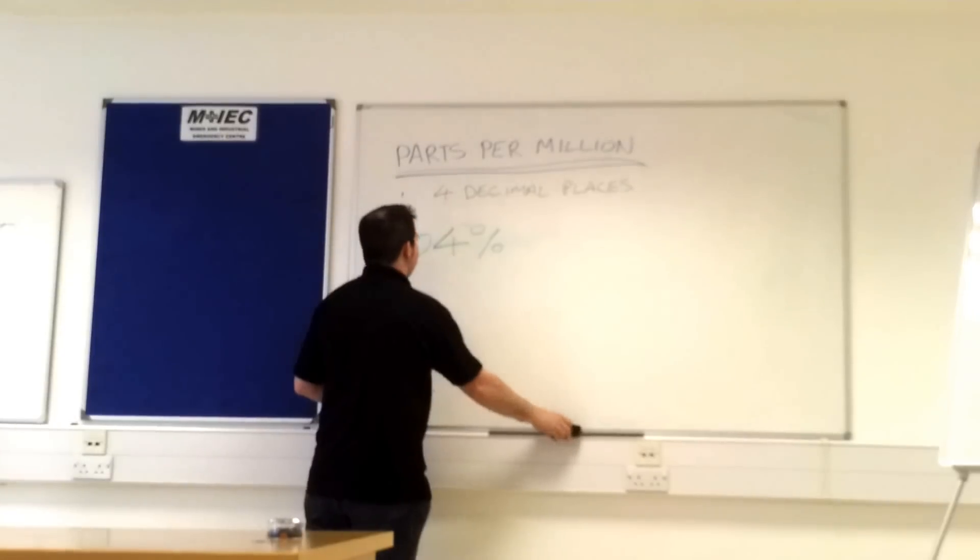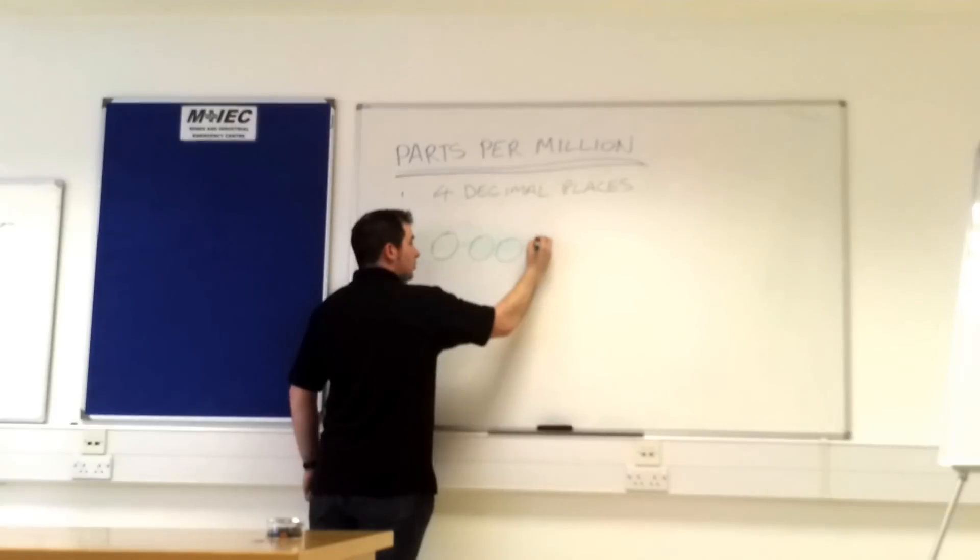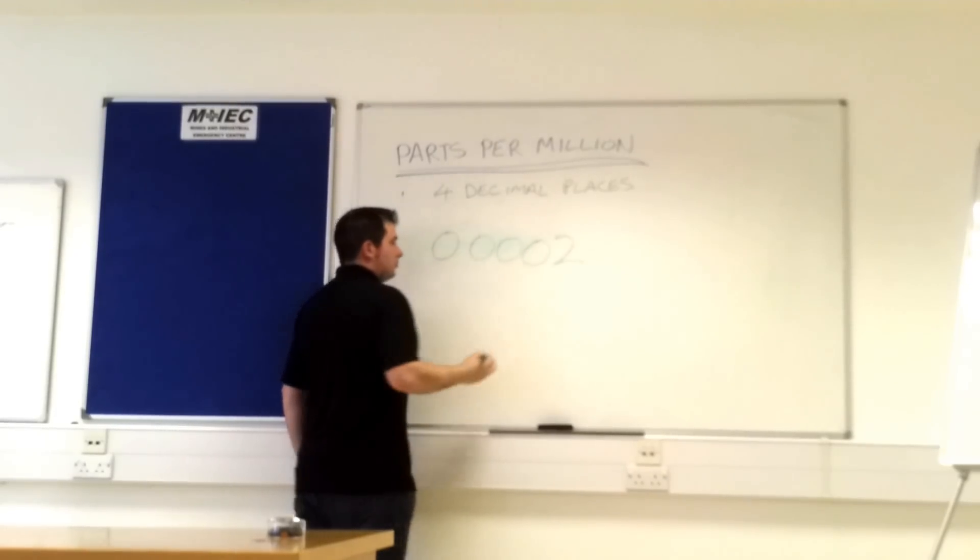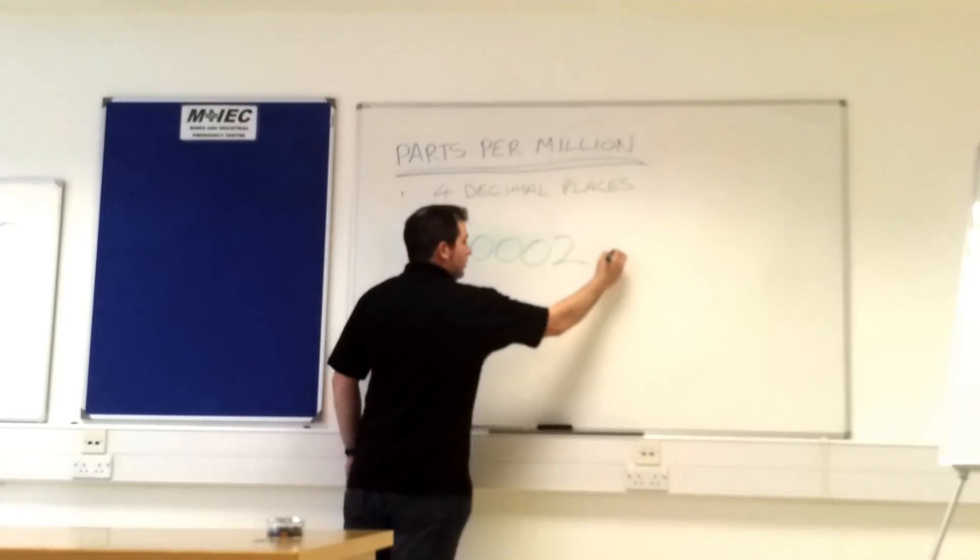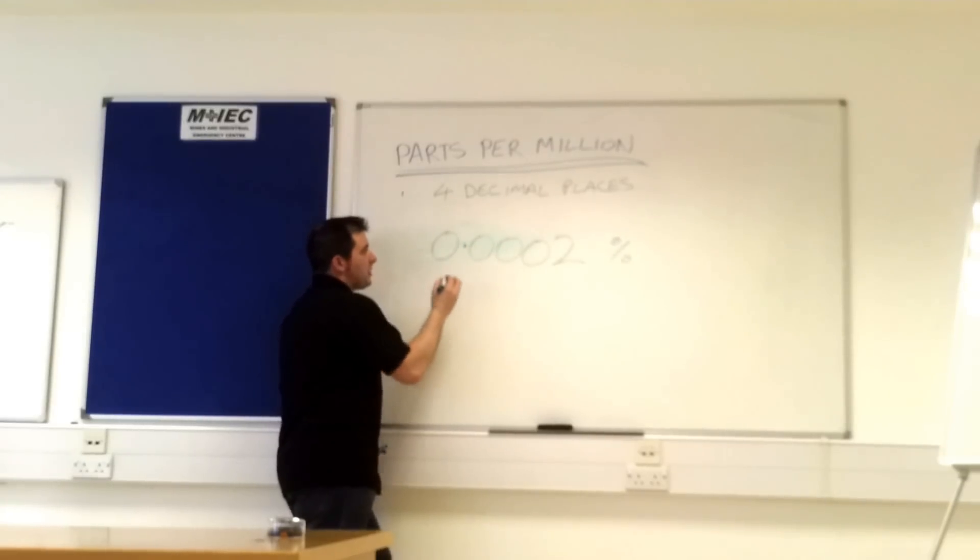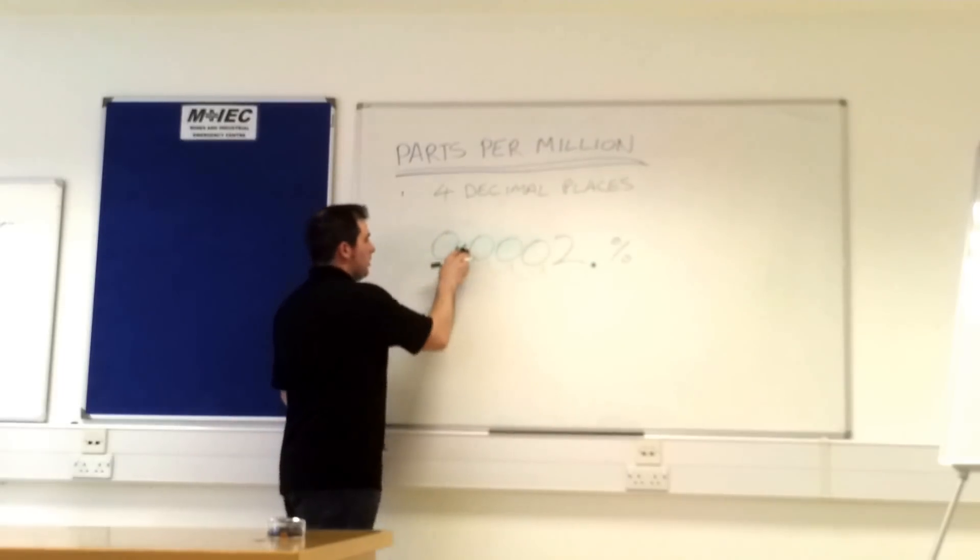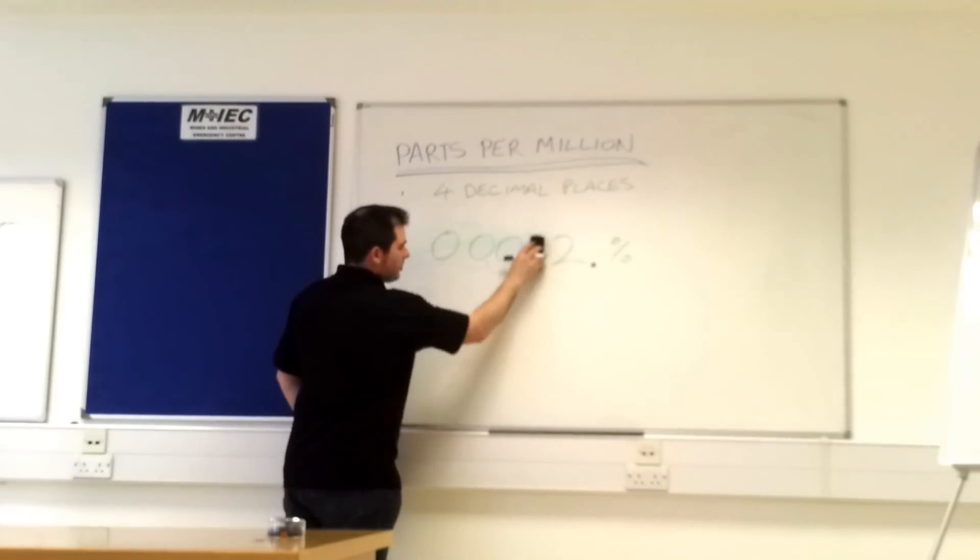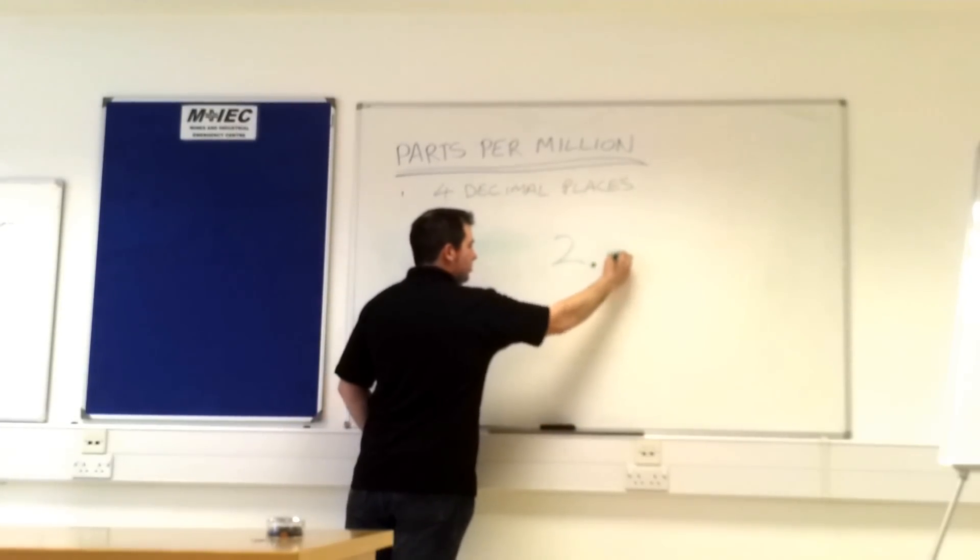Let's try another one. Other way this time. Percentage, 0.002%. Crikey, a lot of zeros there. Now you can see why we use the PPM scale. Try and convey that to someone. 0.002%, how many noughts? That's percentage. It's actually the same again. Move four decimal places. There's our spot. One, two, three, four. So our new decimal place is there. Get rid of the old one. Get rid of all the zeros in front that we don't need. There we are. 20 PPM.